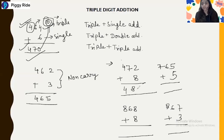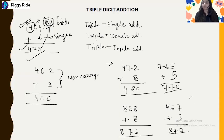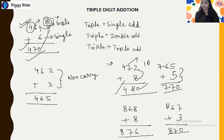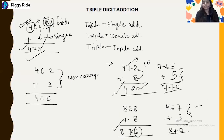The answers: 472+8 is 480, 765+5 is 770, 868+8 is 876, and 867+3 is 870. For 472+8: 8 plus 2 is 10, end number is 0, so 7 increases by 1 giving 480. For 765+5: 5 plus 5 is 10, 6 increases by 1 giving 770. For 868+8: 8 plus 8 is 16, the end number is 6 and 6 increases by 1 giving 876. The same process applies to 867+3.